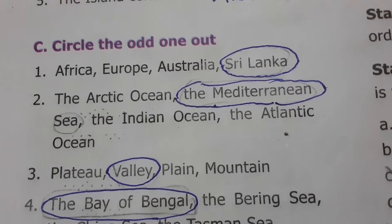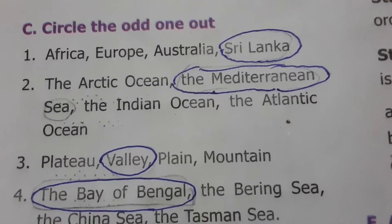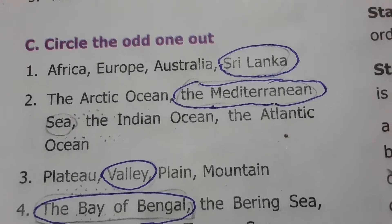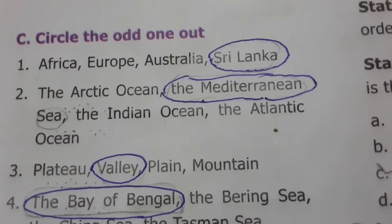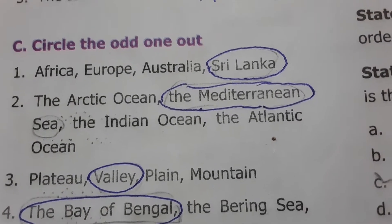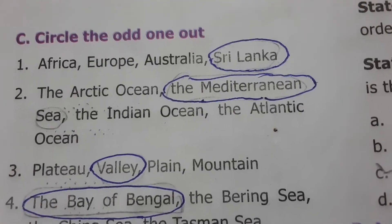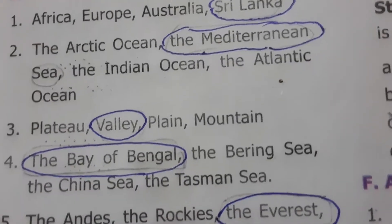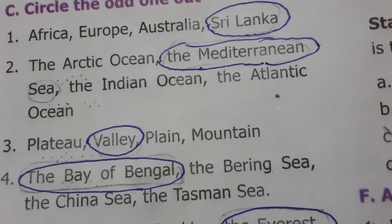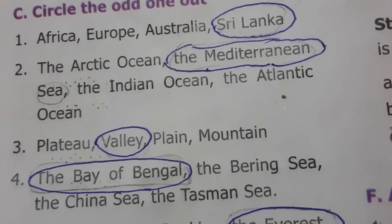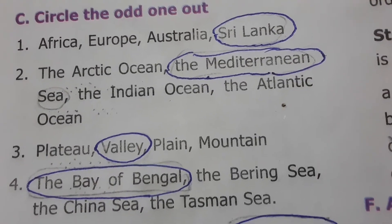Circle the odd one out. Africa, Europe, Australia, and Sri Lanka — Africa, Europe, and Australia are continents whereas Sri Lanka is an island, so Sri Lanka is the odd one. Arctic Ocean, Mediterranean Sea, Indian Ocean, Atlantic Ocean — except the Mediterranean Sea, the other three are oceans, so Mediterranean Sea is the odd one. Plateau, valley, plain, mountains — plateau, plain, and mountains are second order landforms whereas valley is third order, so valley is the odd one out.